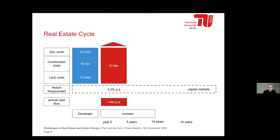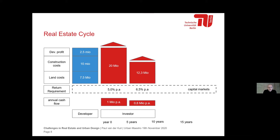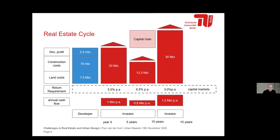The building then goes into the building stock, and the investor keeps it for a while — say five years — then decides what to do with it. Perhaps he wasn't so good at managing the property, so his cash flows went down to $800,000 and the markets assess it as a little more risky. The value could then drop to $12.3 million. The investor will probably not do nothing with the building but keep it and start managing it better in order to create more cash flow.